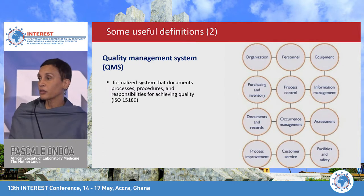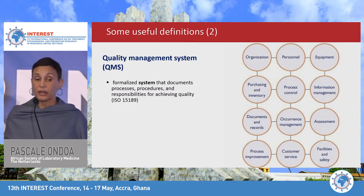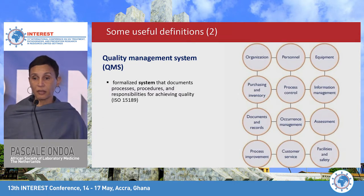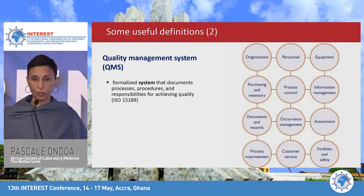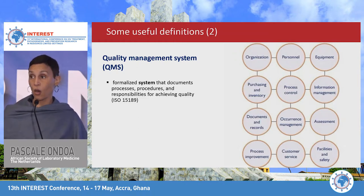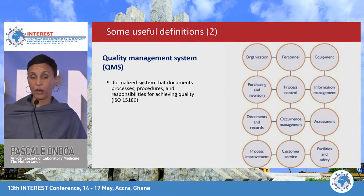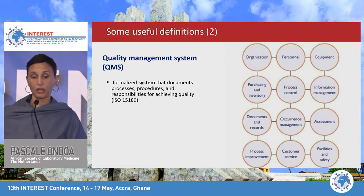It is also important to understand what a quality management system is. It's a formalized system that documents all the processes, procedures, and responsibilities for achieving quality standards. It addresses many different aspects of quality, from process controls and workforce to supply chain and customer services.